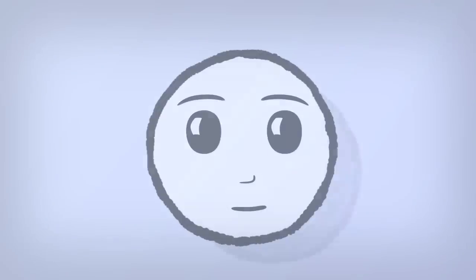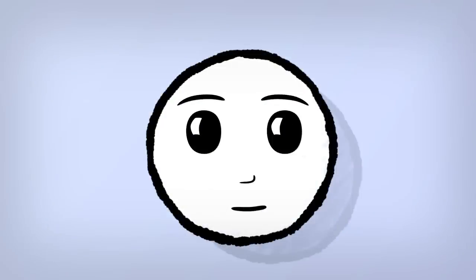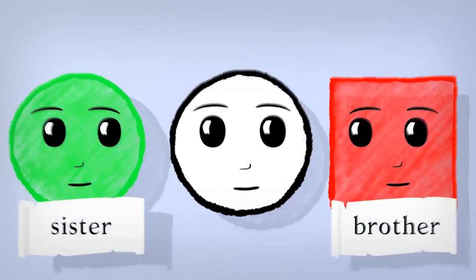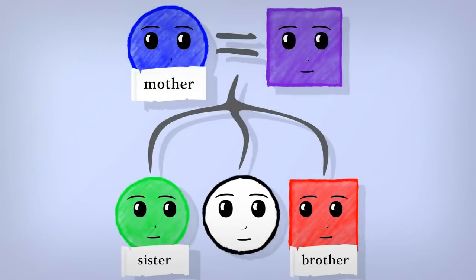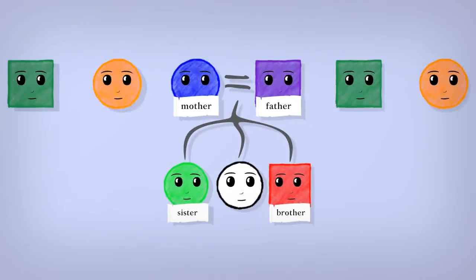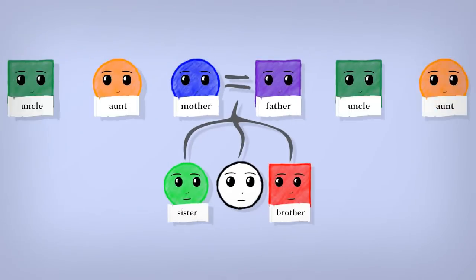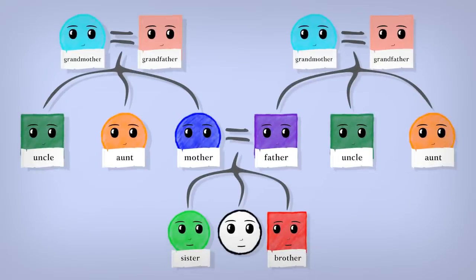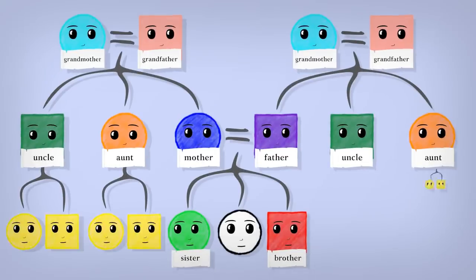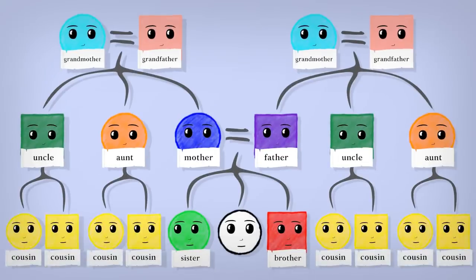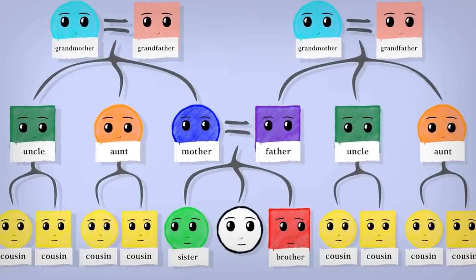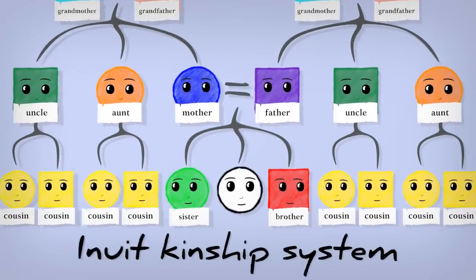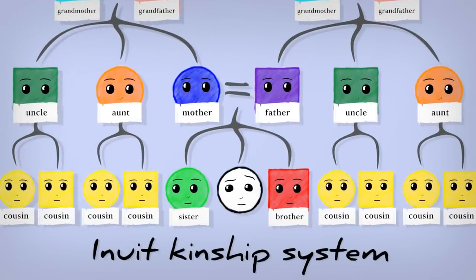Let's start with you. You're generation zero. By your side, you have siblings — let's give you a brother and a sister. One generation up, we meet your parents, mother and father. They have their own siblings: your aunts and your uncles. Up one more, and there are your grandparents. Back to your uncle and aunt — their children are down in your generation, and they are all cousins, no matter which aunt or uncle on which side of the family. What we just described is the Inuit kinship system — not English, though we do use this system.